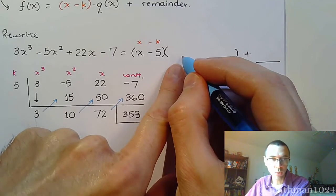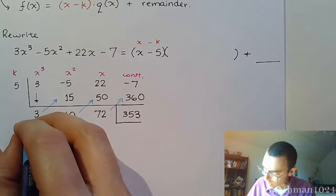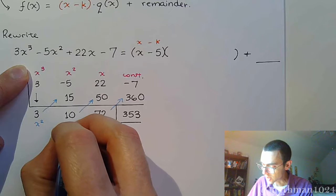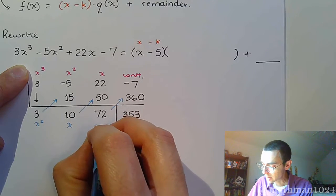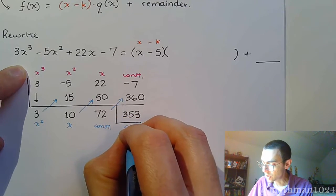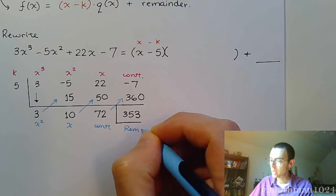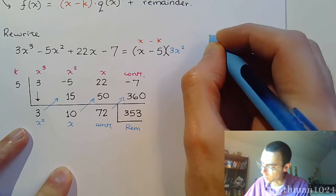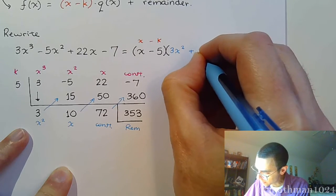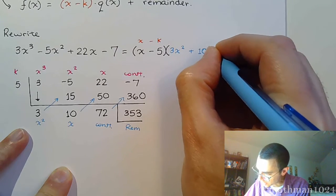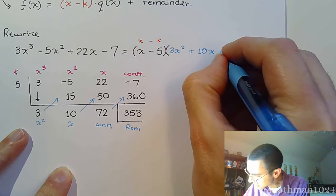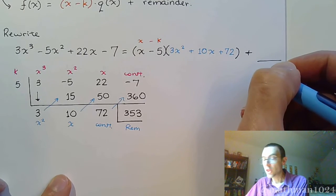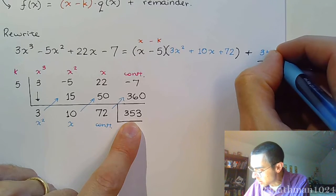Here's how we write our answer. Our quotient, q of x, comes from the bottom row. Since we divided a cubic, this is now x squared. So we get 3x squared plus 10x plus 72. And then we take this remainder — 353 — and the remainder just goes right here.